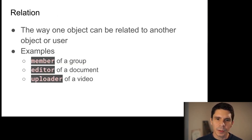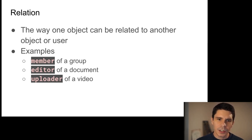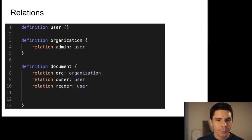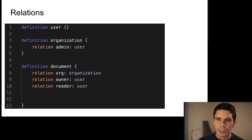Relations are the way objects relate to one another in a relationship. Someone could be a member of a group, an editor of a document, or the uploader of a video. All of those relationships combine to give a sense of who is allowed to have permission to what. This is how we add relations to our schema.